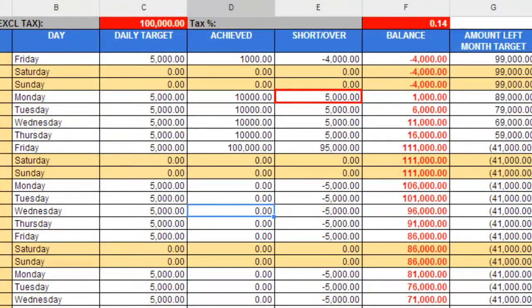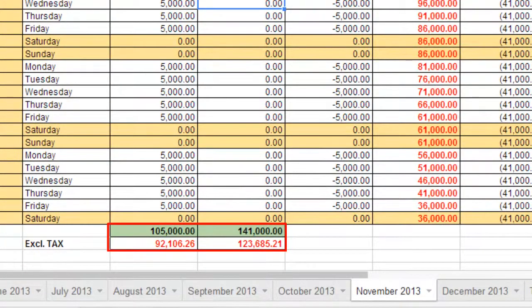The short or over column will tell me how much I'm short for the day and then the totals at the bottom of the spreadsheet give me a running total of what my targets are, what I achieved and how much I'm short for month end.